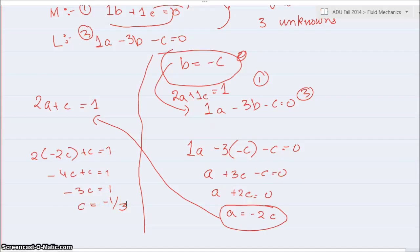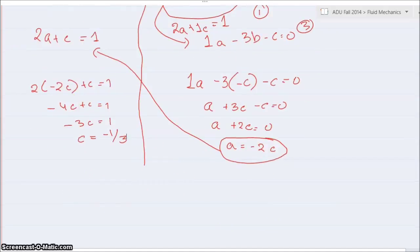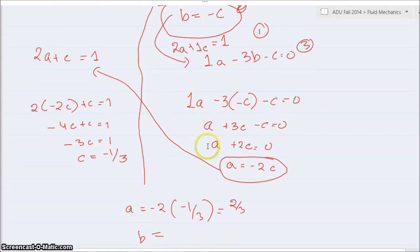So now that I got c, I can get a which is a is equal to minus 2 times minus 1 by 3, which is equal to 2 over 3. And b is equal to, what is b equal to? b is equal to minus c, so b will be equal to 1 over 3. b is equal to 1 over 3.